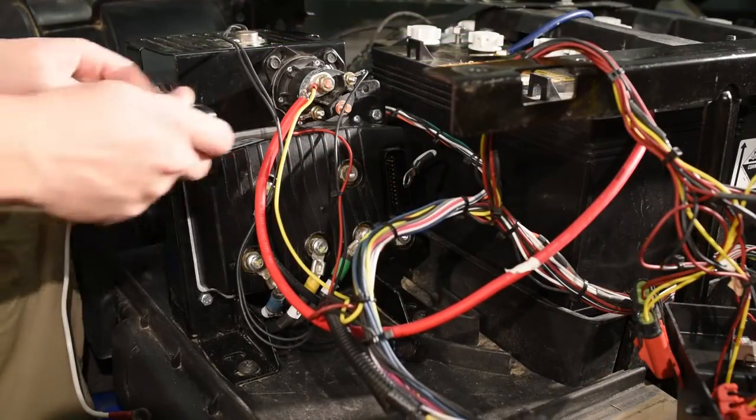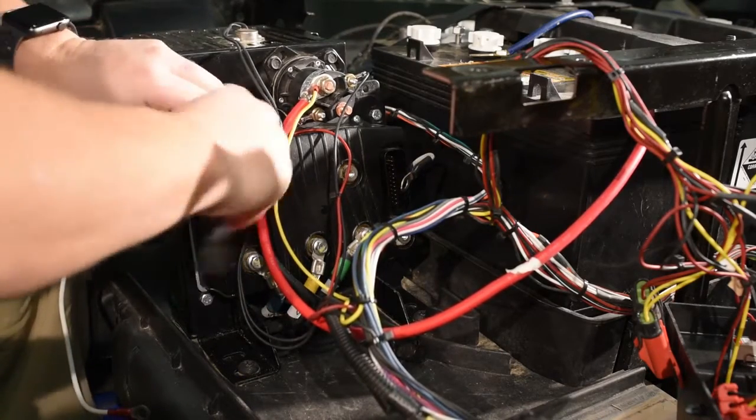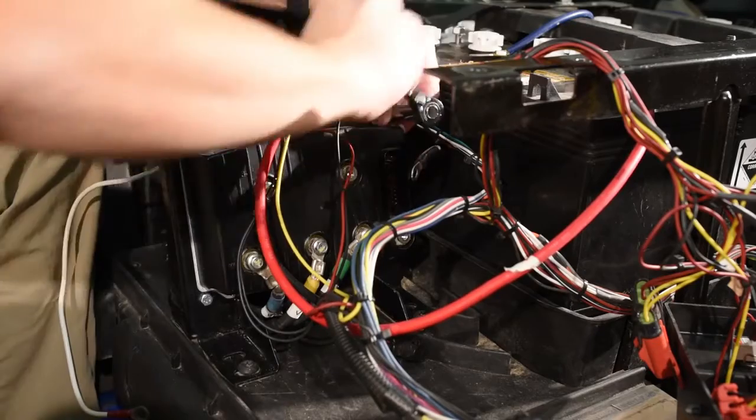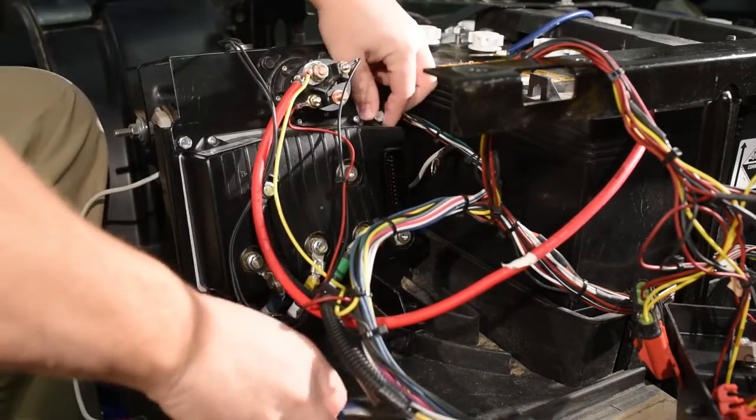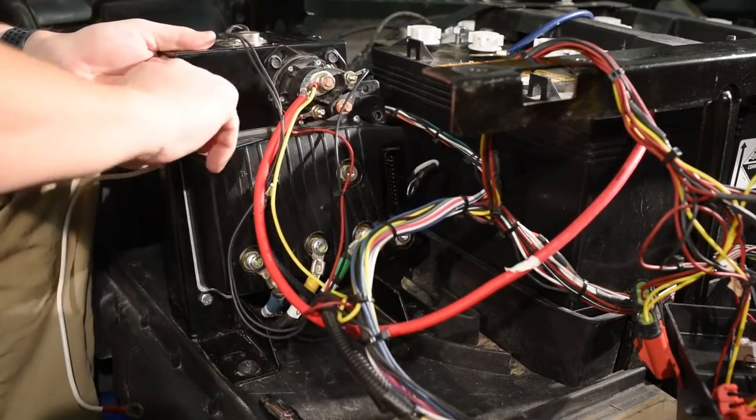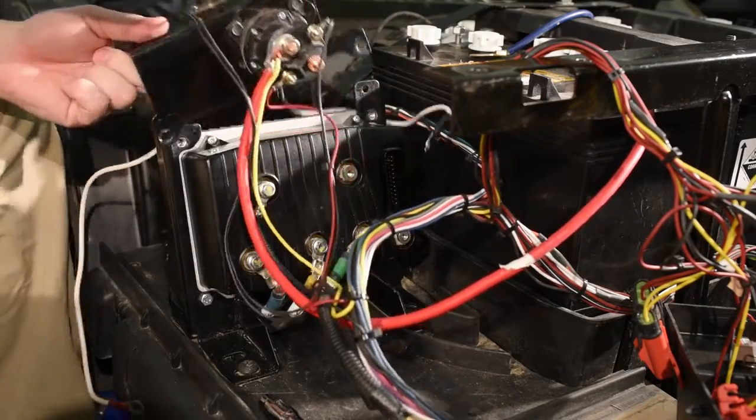The next step is to remove the resistor cage itself and move it off to the side.